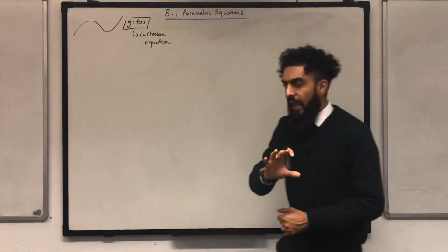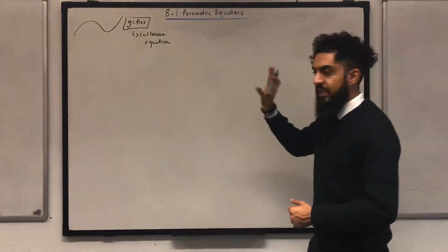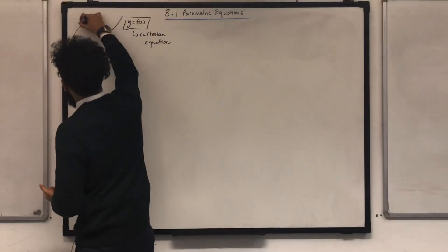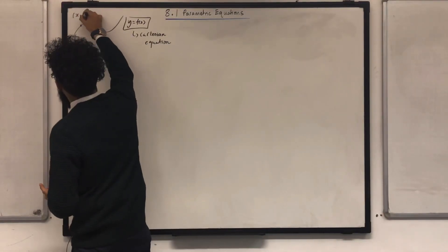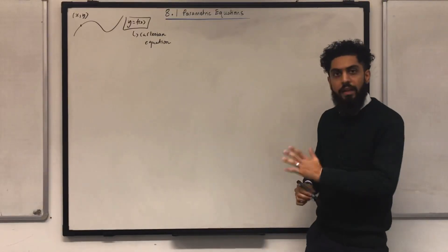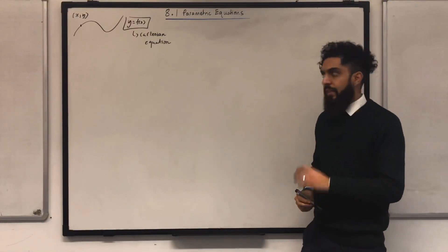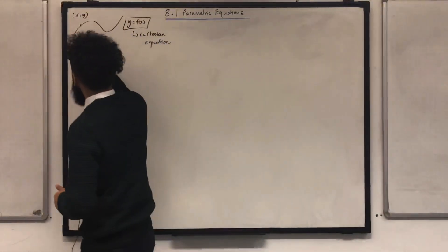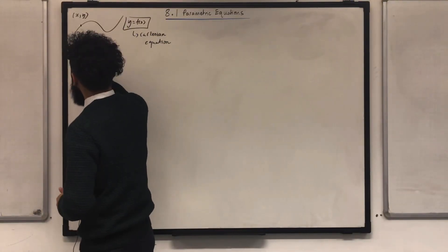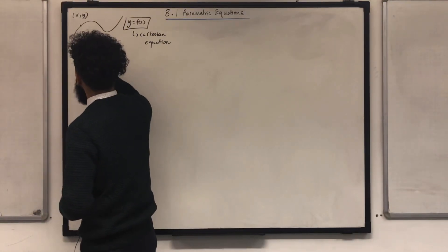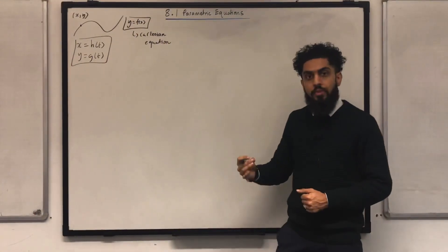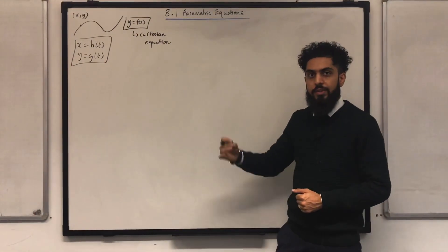I'm going to pick any general point on this particular curve — suppose I pick this point, x and y. I'm going to write down x as a function of t and y as a function of t. So x is equal to h of t, y is equal to g of t. We call these equations the parametric equations of the curve.